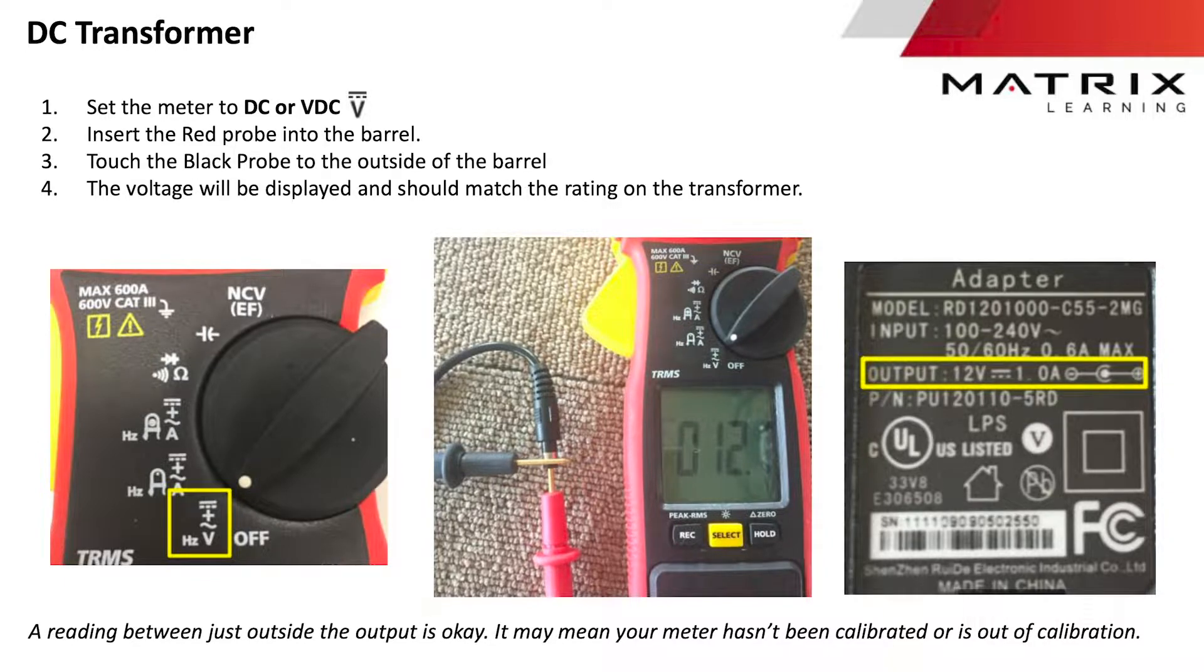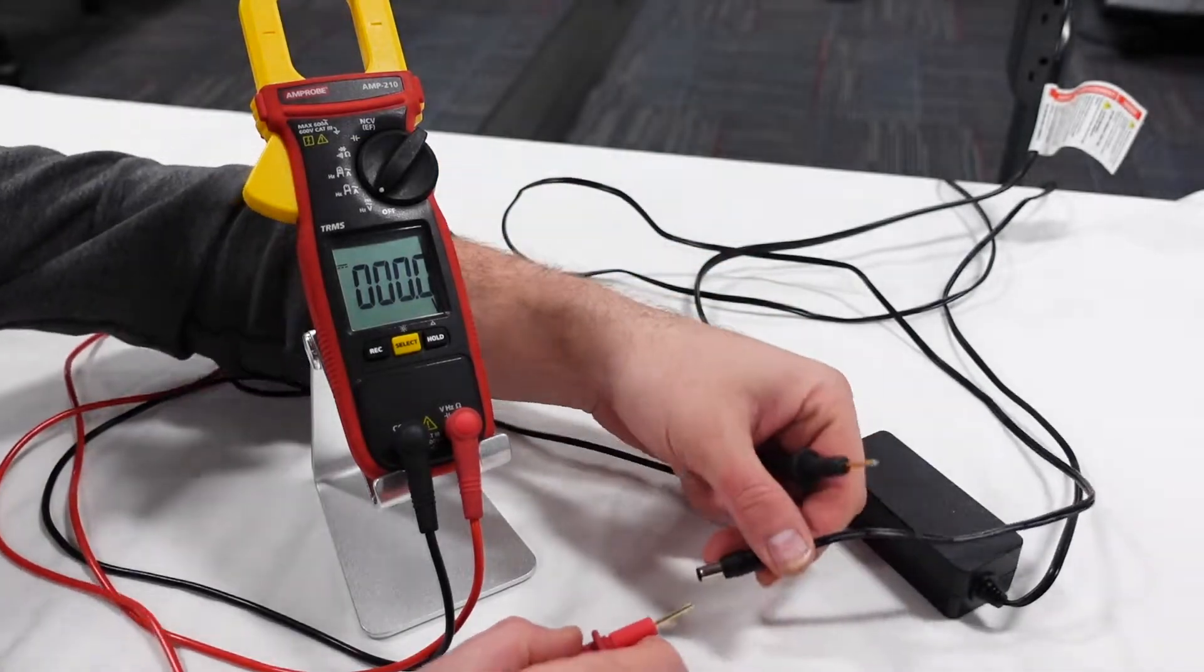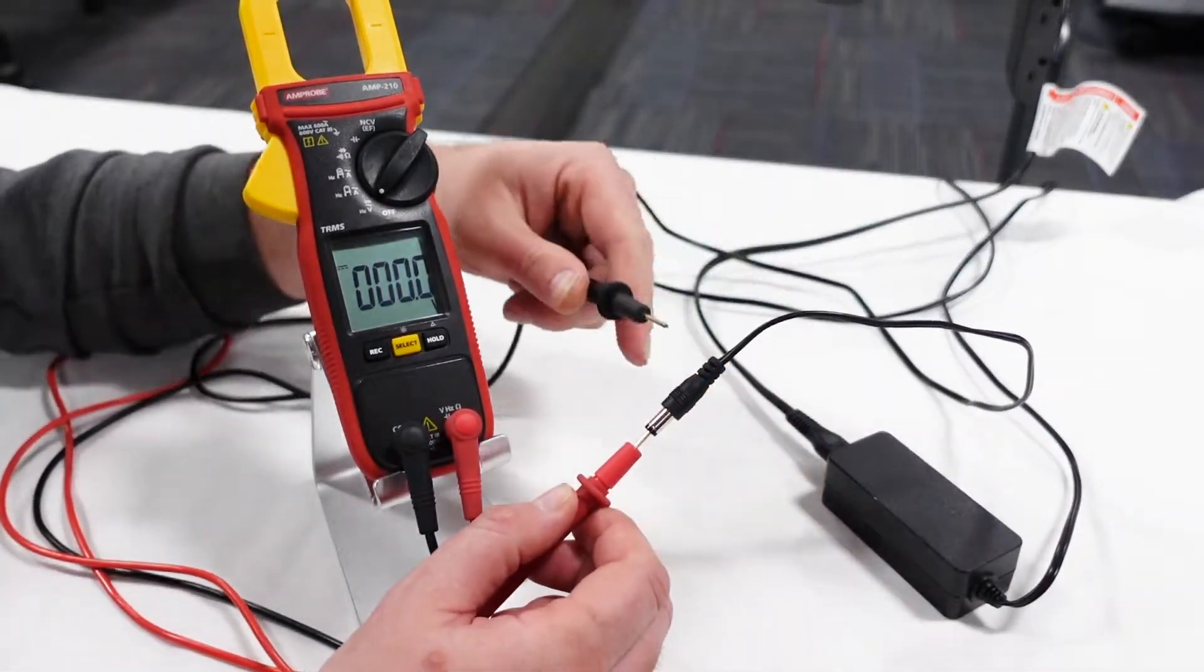12 volt DC power supplies can also be tested by probing the positive end of the connector with the red lead and negative end of the connector with the black lead.